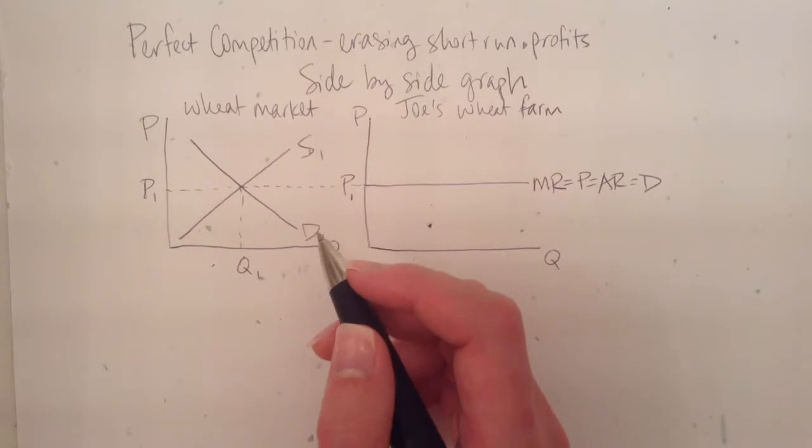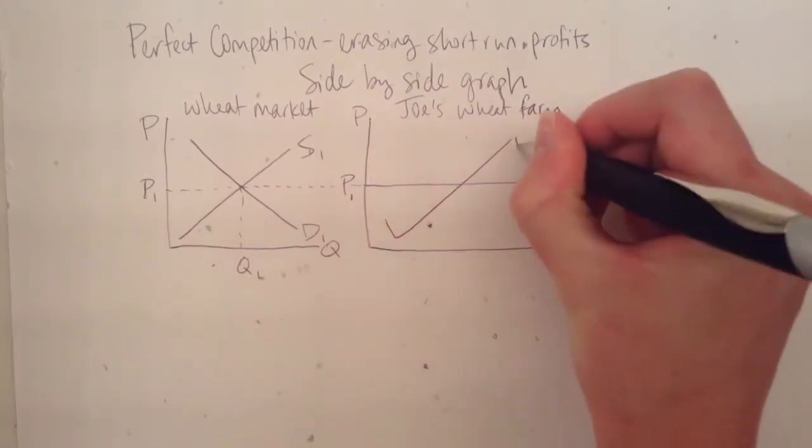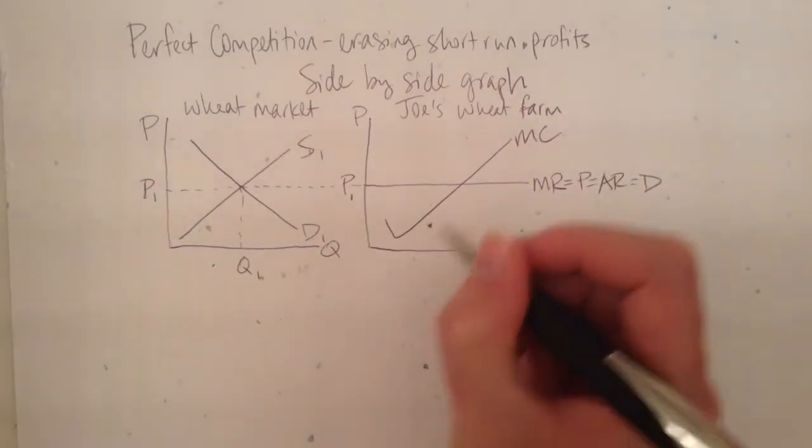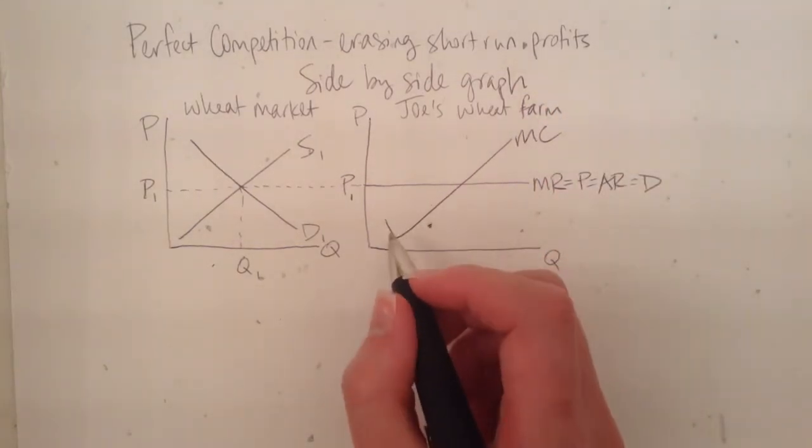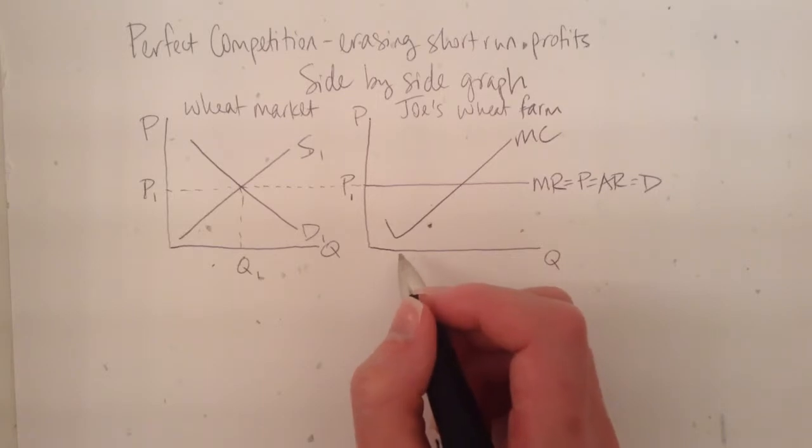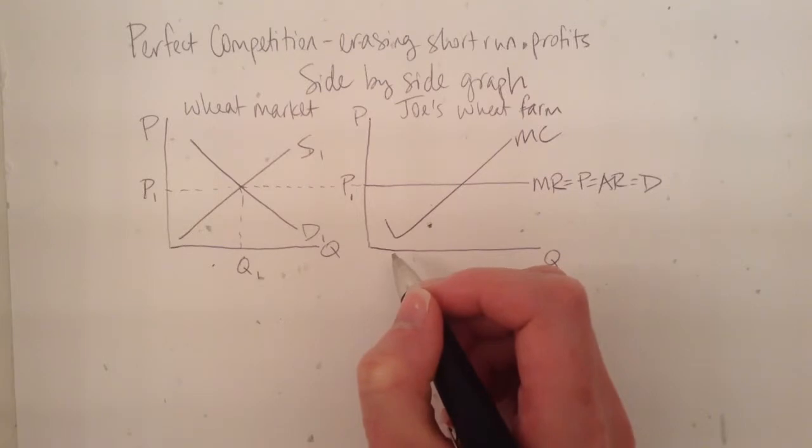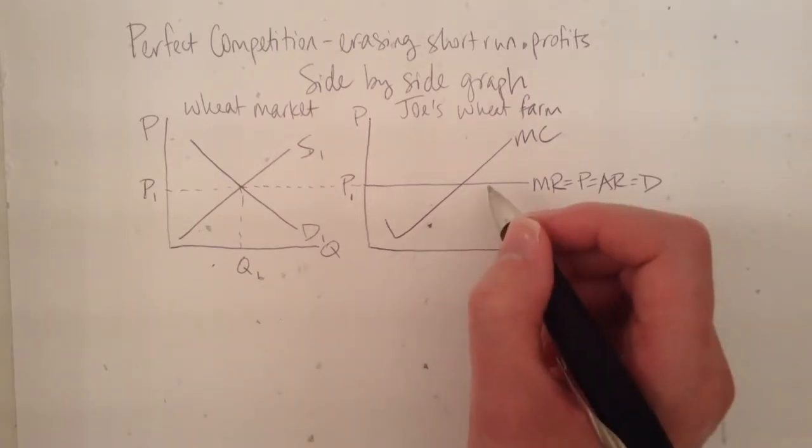So then all we have to do is draw his marginal cost and his average total cost curves. So marginal cost looks like a swoosh, and that's because initially marginal cost is going to decrease as Joe's quantity or output or production increases. But right about here, Joe's going to reach a point where he faces diminishing marginal returns due to his fixed inputs, like in this case his tractors and the amount of land he has and things like that. And that's going to force the marginal cost to start increasing the more he produces.